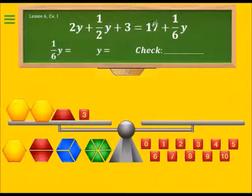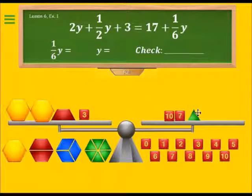On the right side we need 17, so we have a 10 and a 7, and we need one-sixth of y. The green blocks are each a sixth of y. At this point we are ready to do our legal moves.